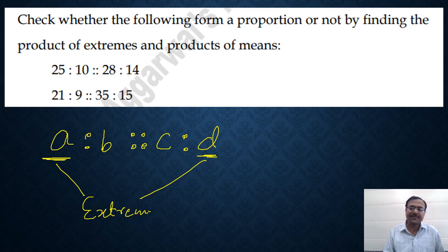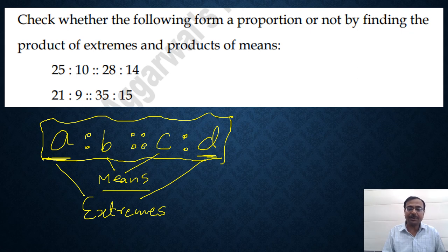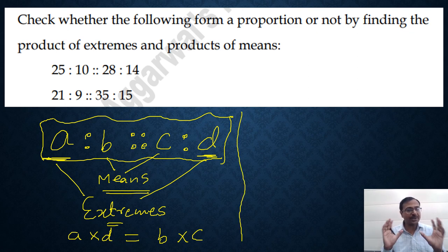The first and the last are called extremes. And the middle two are called means. Now, whenever you have to check whether these four numbers form a proportion or not, then there is a rule for that. The rule is that the product of the means, that means b into c and the product of the extremes, that is a into d, should always be equal. If they are equal, the two products are equal, then the four terms are in a proportion. But if they are unequal, then they are not in a proportion.